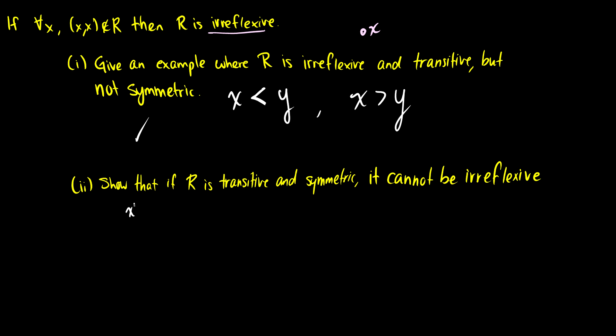We know that xRy and yRz implies that xRz. And we also know that if xRy, then we're going to get yRx. So it can't be irreflexive. We have to assume that x is related to something. We're going to assume that x is related to y, for example. Then what happens is by symmetry, we get that y is related to x. But if x is related to y and y is related to x, then we're going to get that x is related to x by transitivity.